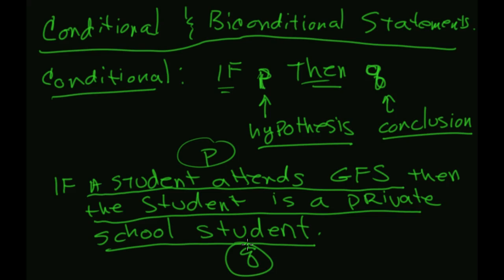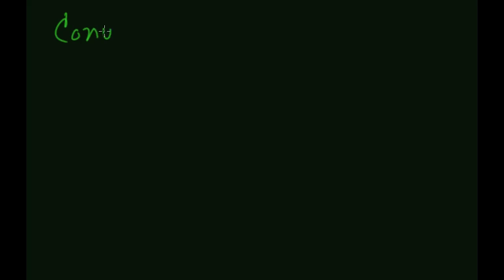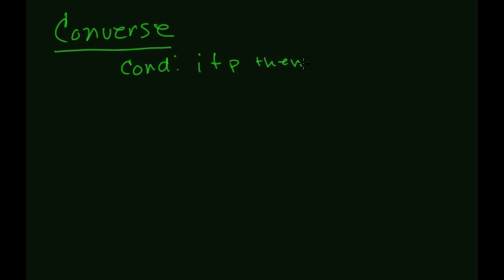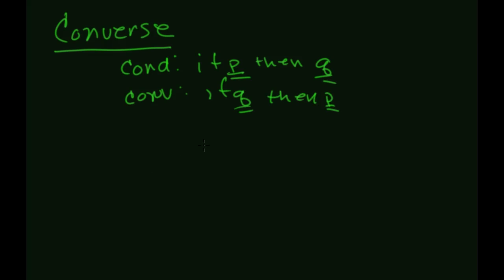That's what a conditional statement is all about. This gives us a moment to ask: what happens if I reverse this? That's what's called a converse. If the original conditional is 'if p then q,' the converse is 'if q then p.' When the conditional is true, the converse might be true or it might be false — there's no guaranteed correlation between them.